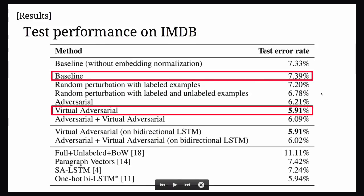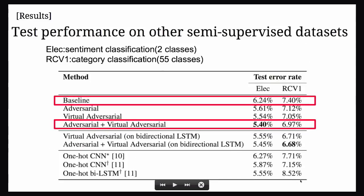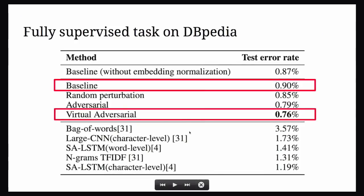On IMDB movie review classification, the baseline is from our work last year — pre-training an LSTM as a language model and then doing classification. With the virtual adversarial method we get improvement on par with the state of the art. For other datasets such as RCV1 and ELEC we get similar results, beating the state-of-the-art CNNs and bidirectional LSTMs. For DBpedia we beat character-level and word-level models and models such as fastText.